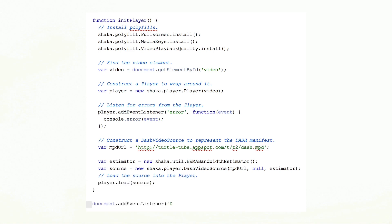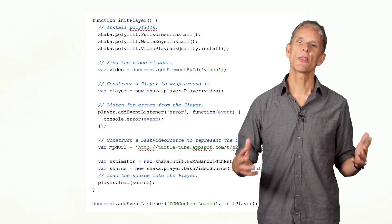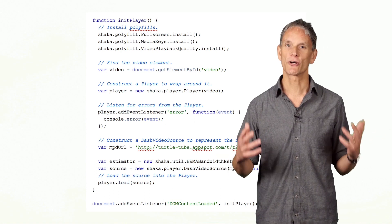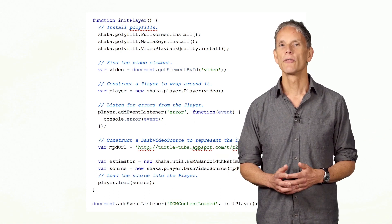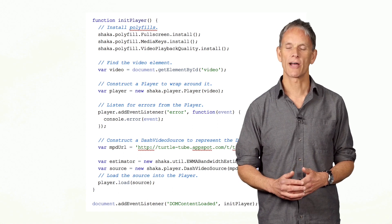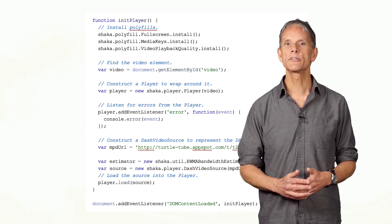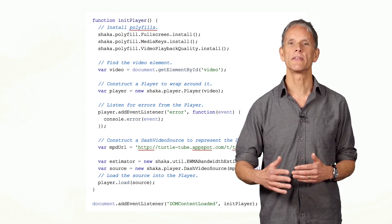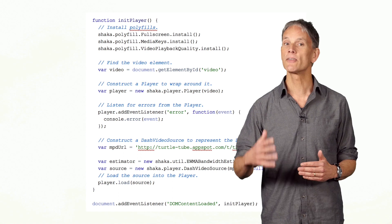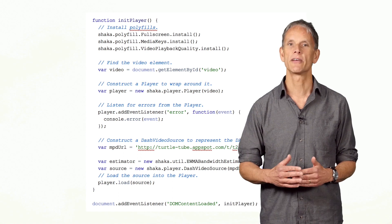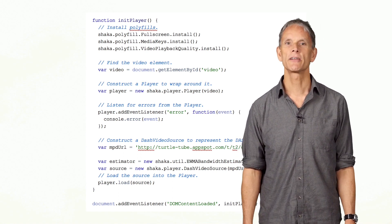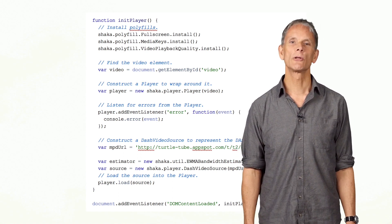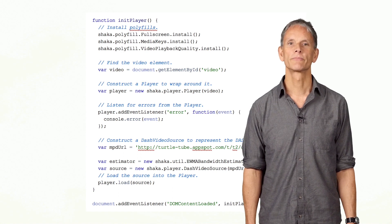On the back end, you'll need to encode and package your content ready for streaming. There are several open source tools available which can be used to convert content to a valid segmented file and generate a manifest. To find out more about DASH packaging and encoding, take a look at the links at the end of the video.